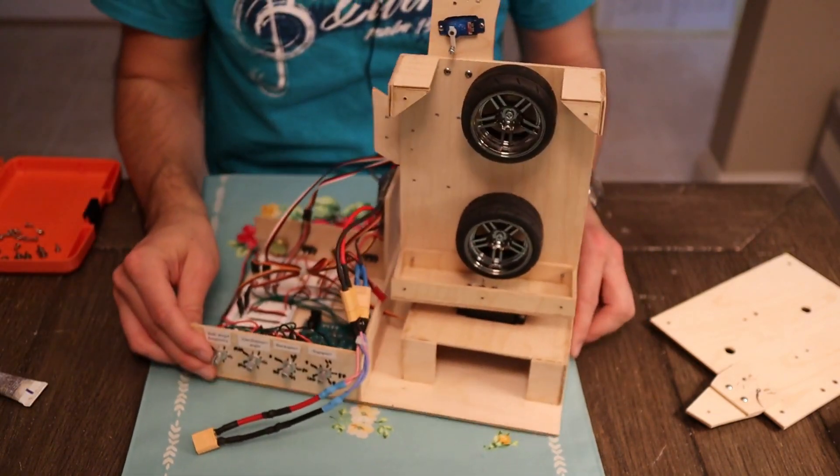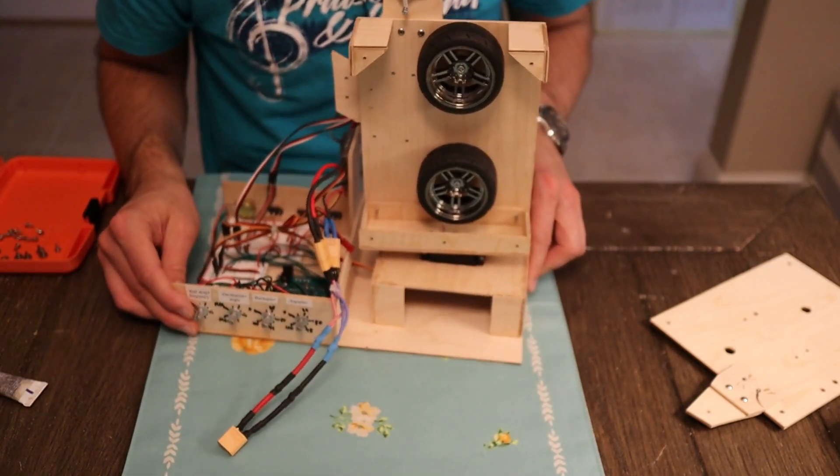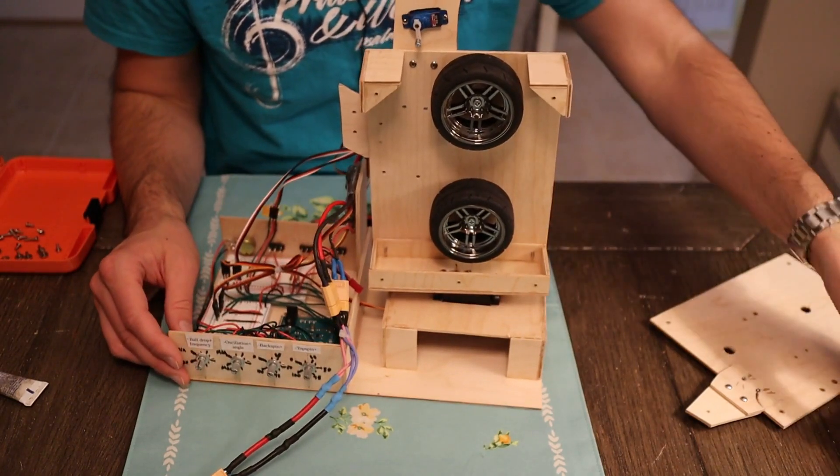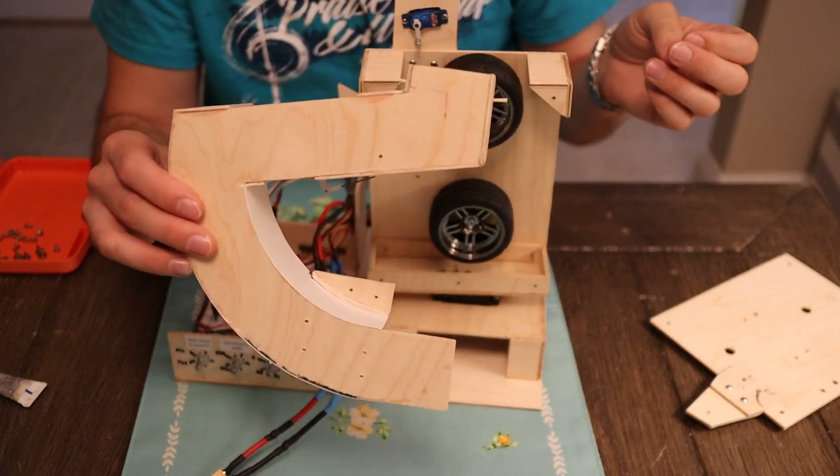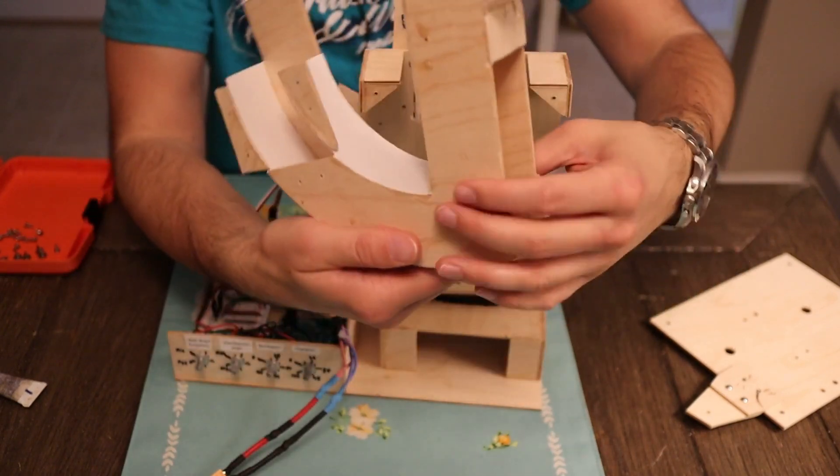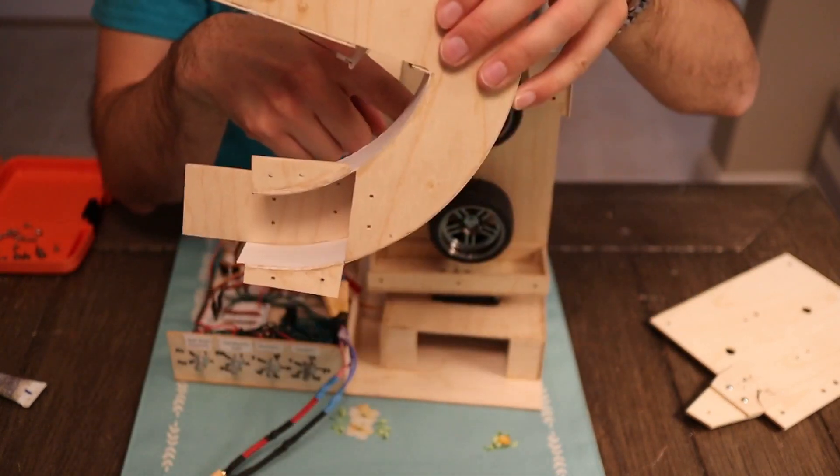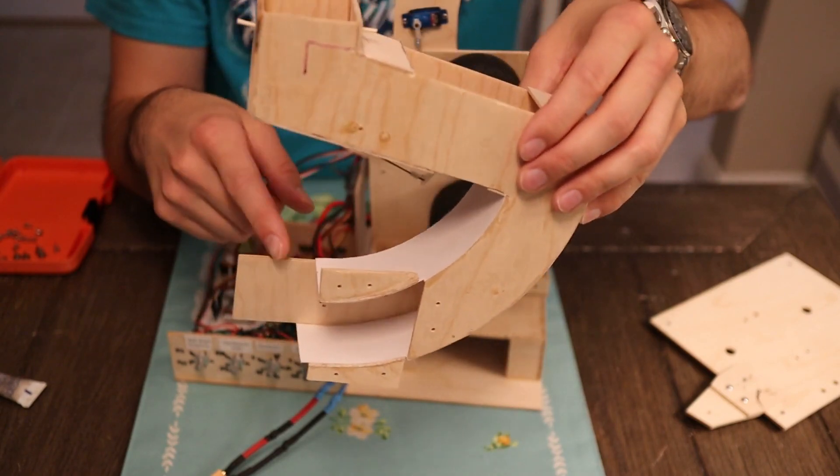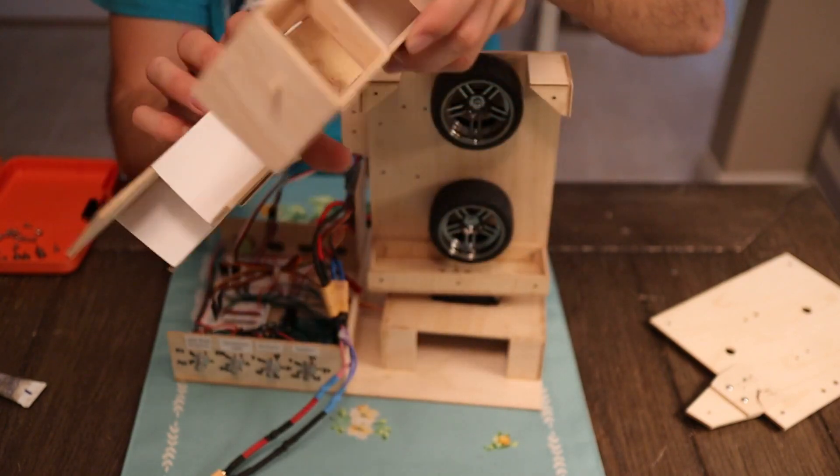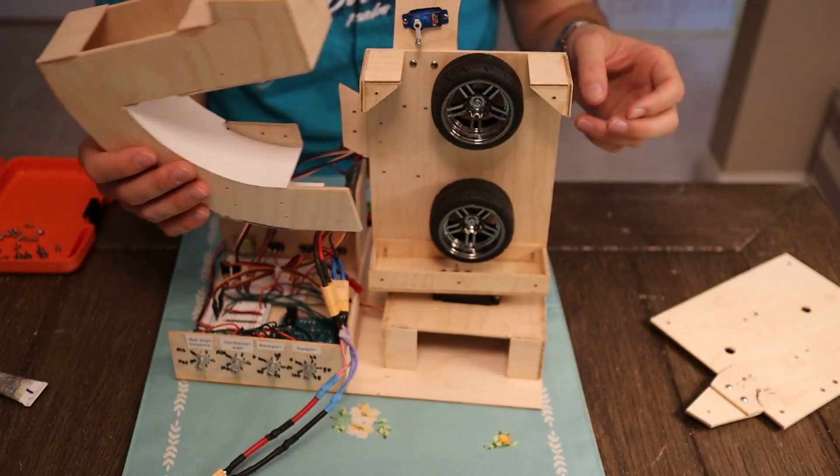So I have the two wheels on there, and now the next part of this thing is a chute. So this will attach, and the balls go in through the top, and then they get directed down through the shaft, right in between the wheels.